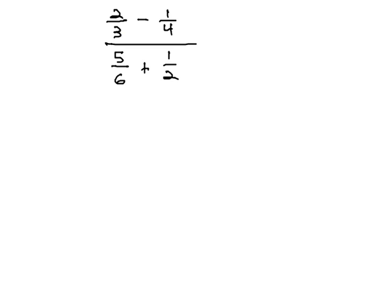Our second, more preferred method is to identify the least common denominator of every single little fraction in this expression. The least common denominator of 3, 4, 6, and 2 is 12.